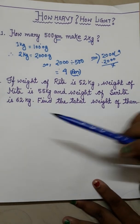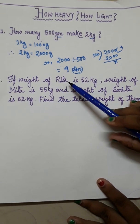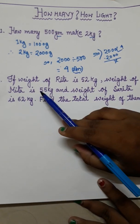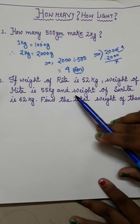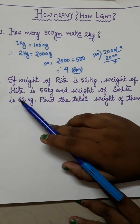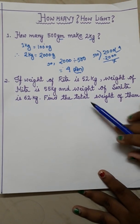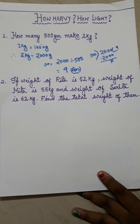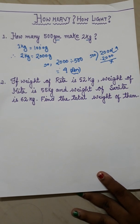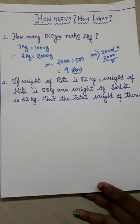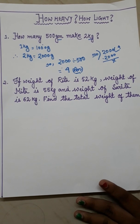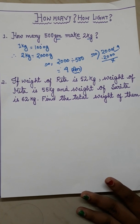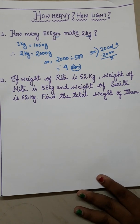Here comes the next one. If weight of Rita is 52 kg, weight of Mita is 55 kg and weight of Sarita is 62 kg, find the total weight of them. From the question you can easily understand what we have to do. Can you say what we have to do? Yes, we have to do addition. Of course, as this is a word problem, we have to write statement.